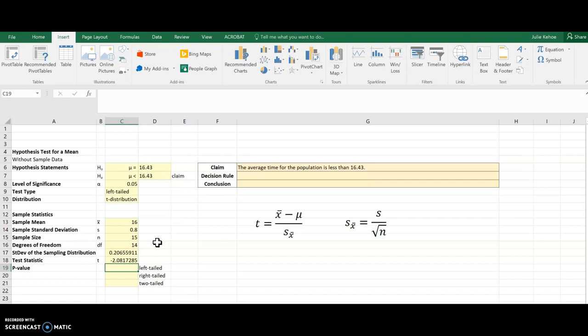Now if I come down here, I'm ready to start doing my left, right, and two-tailed. I'm using a t-distribution, so I'm going to start with t. I can see it there. t.dist, that returns the left-tailed for the t-distribution. So that's the one I want here.